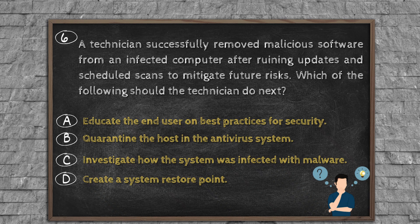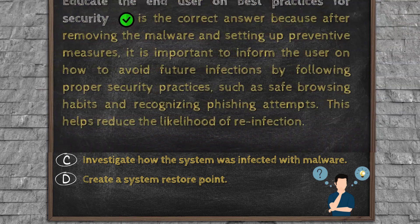Question number six. A technician successfully removed malicious software from an infected computer after running updates and scheduled scans to mitigate future risks. Which of the following should the technician do next? Option A, educate the end user on best practices for security. Option B, quarantine the host in the antivirus system. Option C, investigate how the system was infected with malware. Option D, create a system restore point.